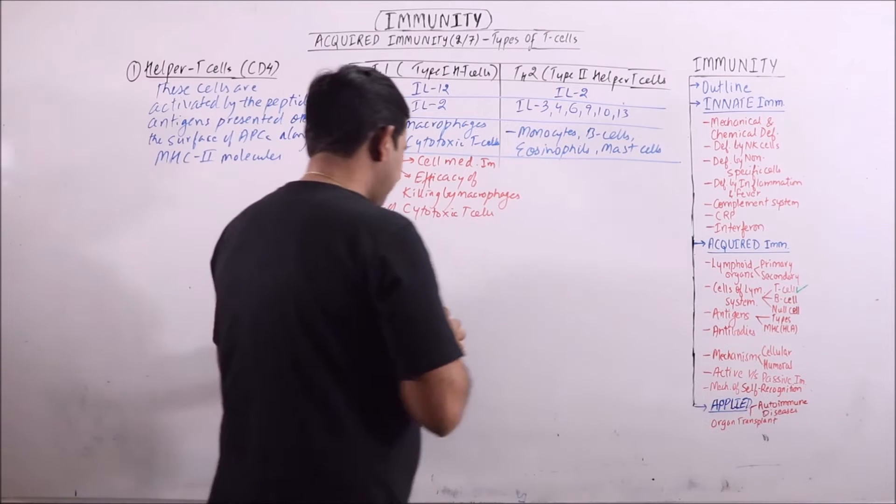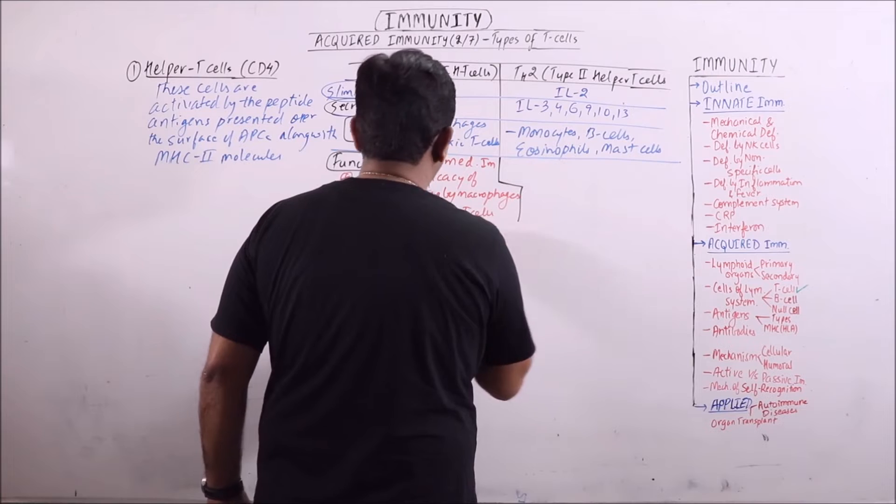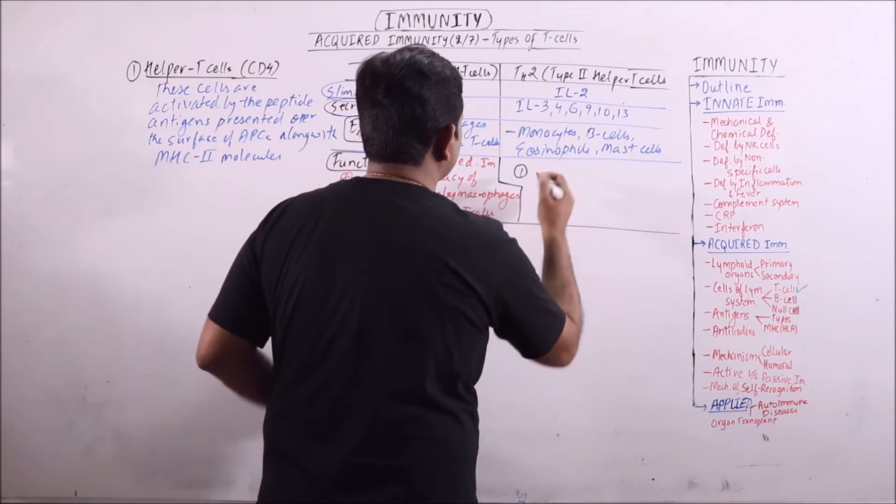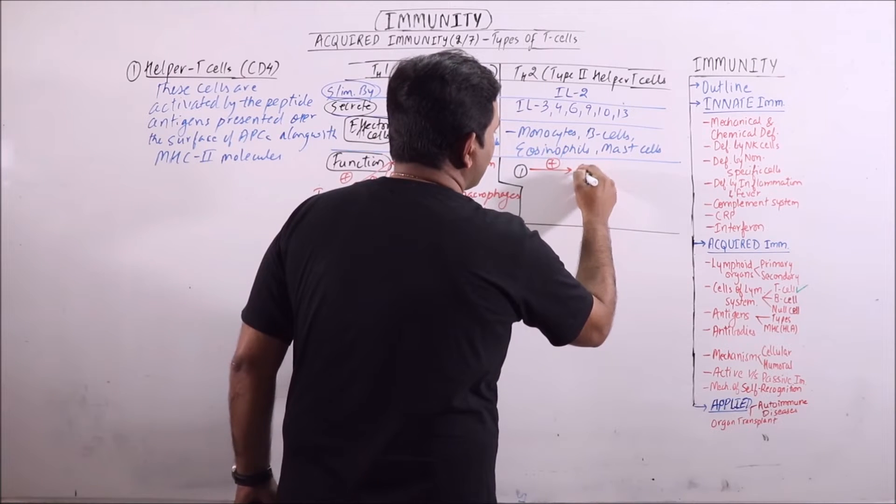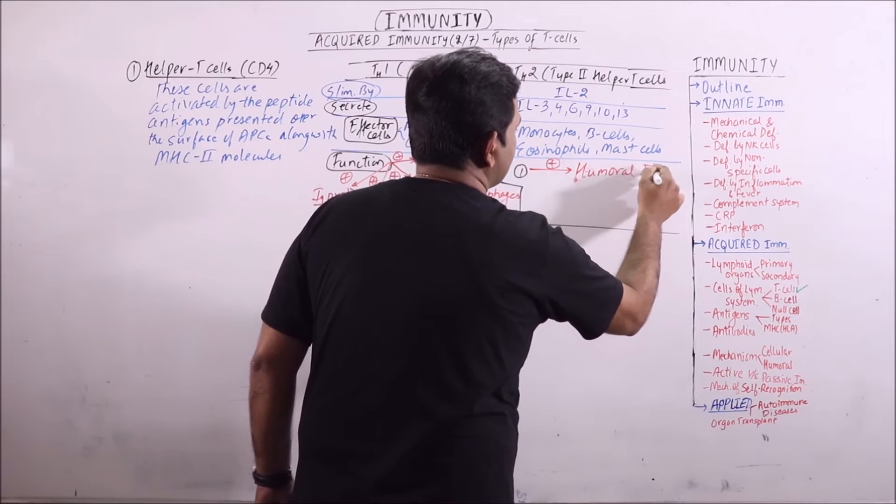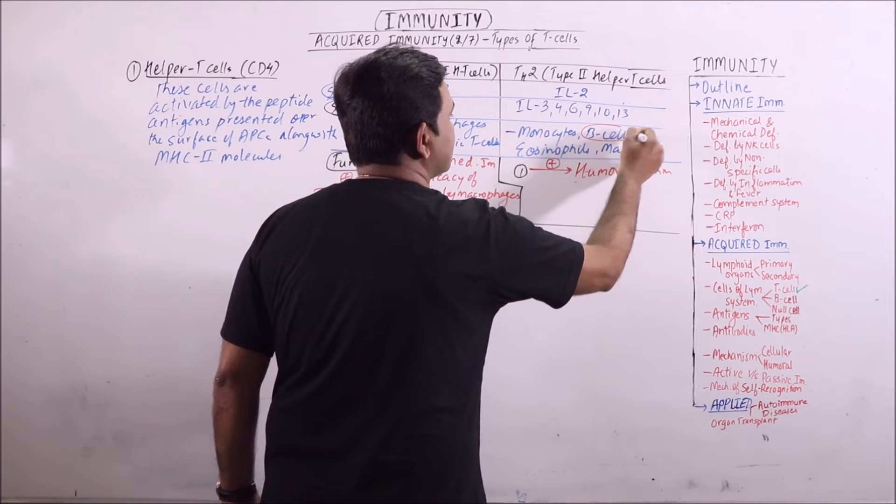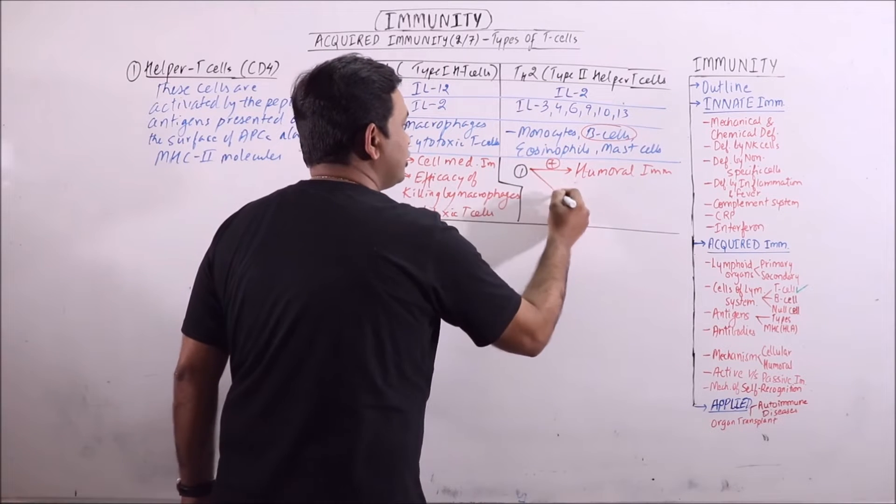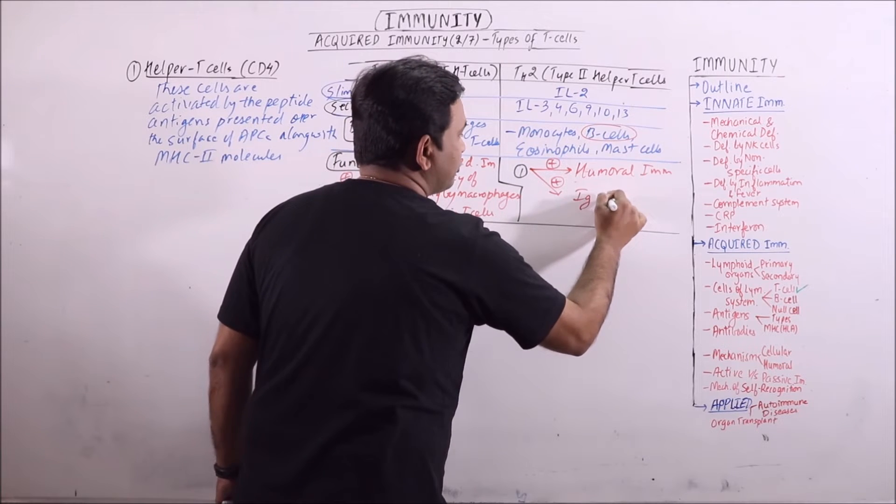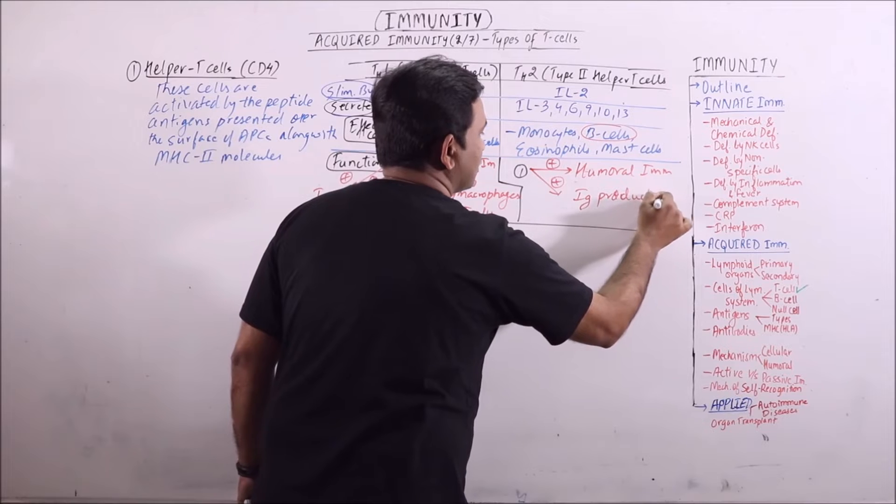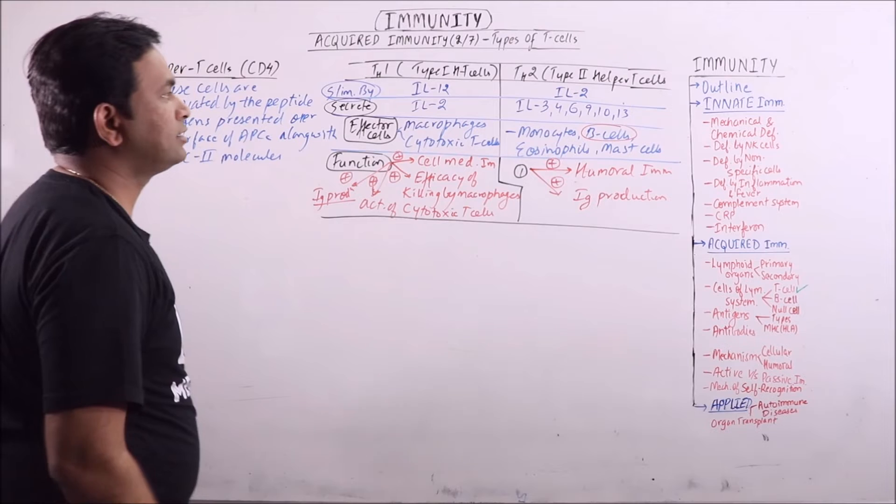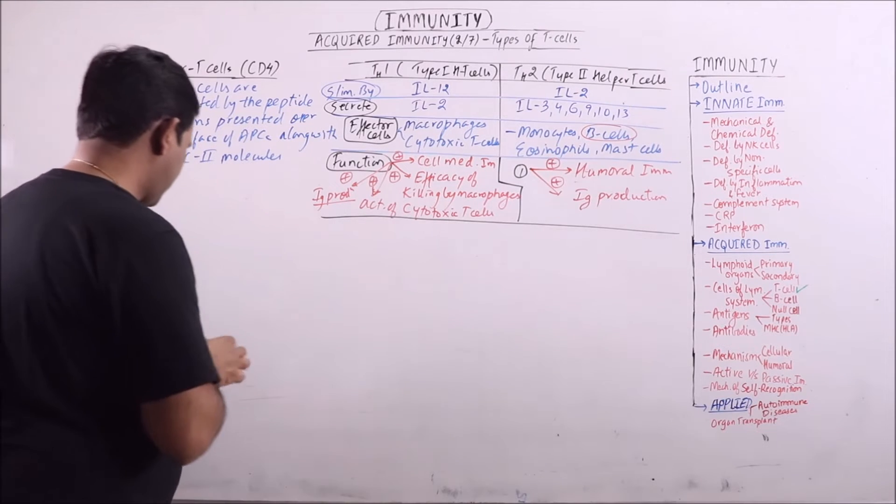The function of Th2 is to stimulate humeral immunity. It is stimulating the B-cells, that's why it promotes the humeral immunity. Also Ig production. Immunoglobulin production is mainly enhanced by the type II helper T-cells. This is the first type of T-cell.